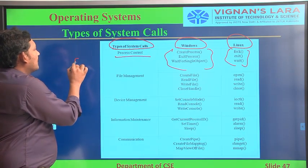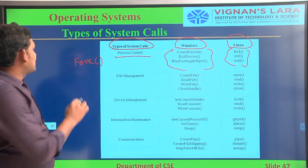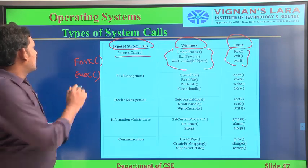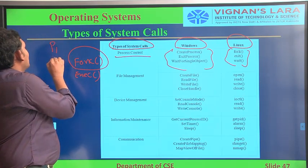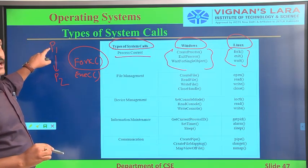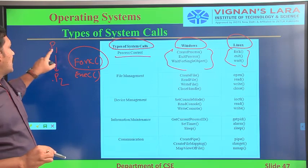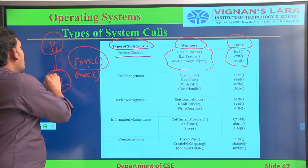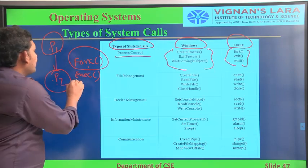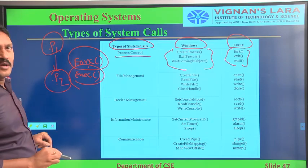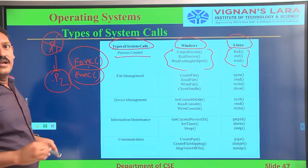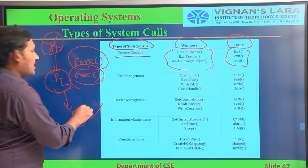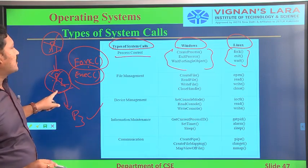The command 'fork' is used for creating a new process. Similarly, 'execute' is also used for creating a new process. The difference is: if a parent process P1 creates a child process P2 using fork, both the parent and child process will exist. If we use execute, the parent process will be terminated and only the child process will be available. This is the difference between fork and execute.